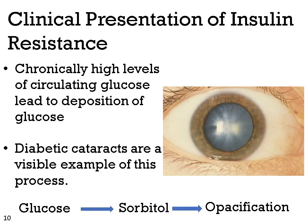Additionally, chronically high levels of circulating glucose lead to the deposition of glucose in tissues where it is not normally found. Diabetic cataracts are a visible example of this process, where glucose traverses the lens and is converted into sorbitol, which then induces osmotic damage leading to opacification of the eye.